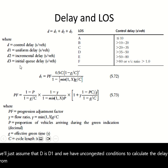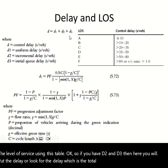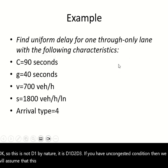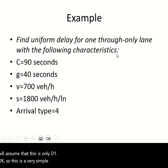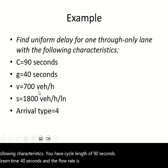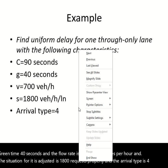You calculate the delay and find the level of service using the LOS table. The total delay is D1 plus D2 plus D3; for uncongested conditions we assume it is only D1. Here is a simple example to find uniform delay for one through lane: cycle length 90 seconds, green time 40 seconds, flow rate 700 vehicles per hour, adjusted saturation flow rate 1800 vehicles per hour, and arrival type 4.